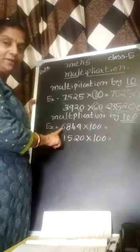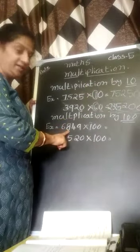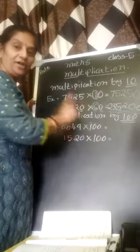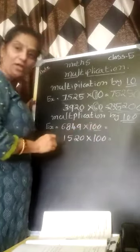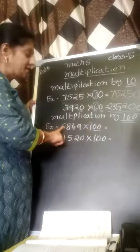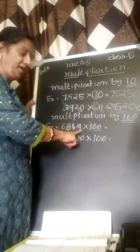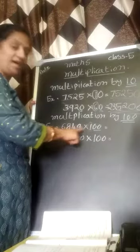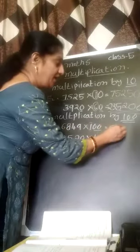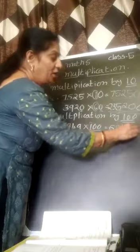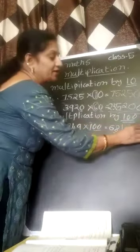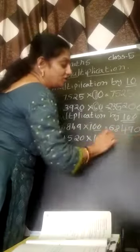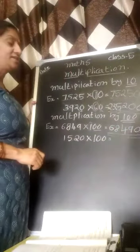For example, 6,849 into 100. You ignore these two 0's. Then you take the number 1 here. 6,849 into 1, what is the answer will come? 6,849. So what about these two 0's? You should write after the answer these two 0's here. This is the answer.